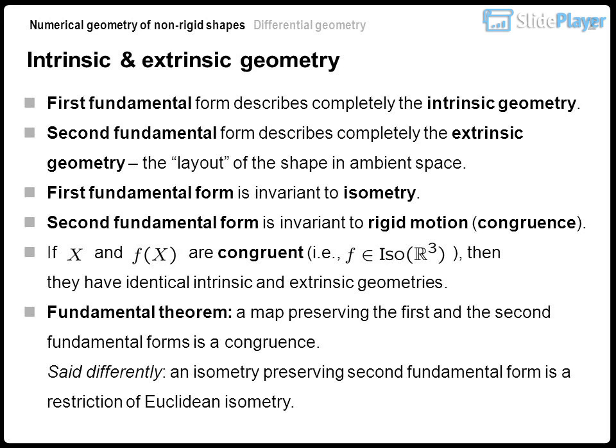The first fundamental form describes completely the intrinsic geometry. The second fundamental form describes completely the extrinsic geometry — the layout of the shape in ambient space. The first fundamental form is invariant to isometry. The second fundamental form is invariant to rigid motion, i.e., congruence.